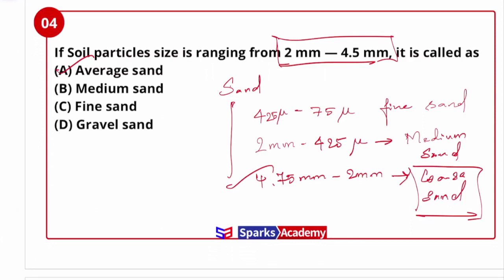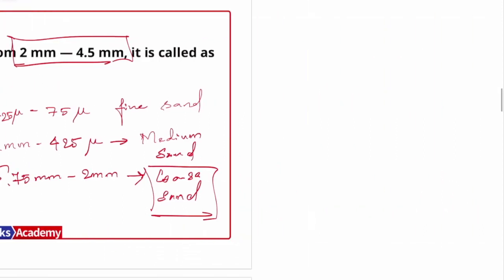For gravel classification: 4.75 mm to 20 mm is fine gravel, and 20 mm to 80 mm is coarse gravel. We categorize both sand and gravel ranges in this way.